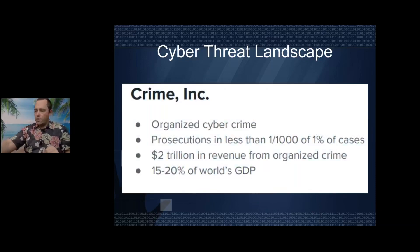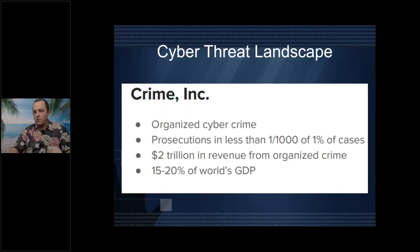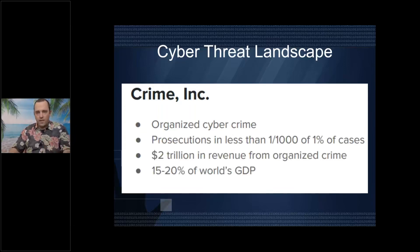Regarding crime organizations — Crime Inc. — this is a statistic from 2015 from the book 'Future Crimes.' It shows that prosecution is less than 1% of cases, meaning criminal organizations are a big business and not about to stop anytime soon. In 2015, there were 2 trillion dollars in revenue from organized crime — 15 to 20% of world GDP. Very, very big.